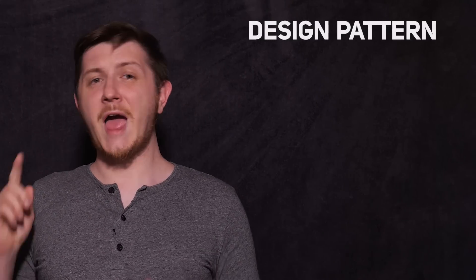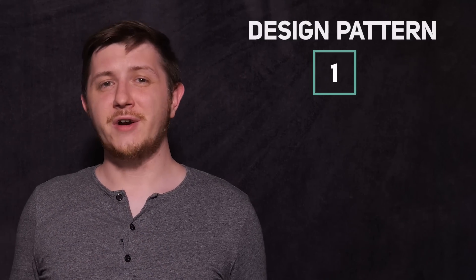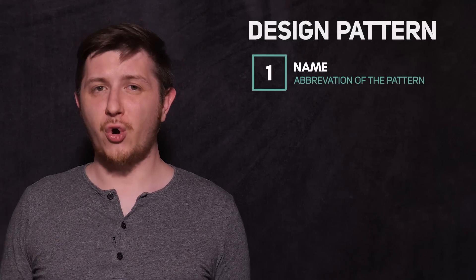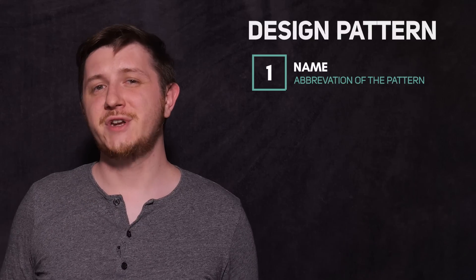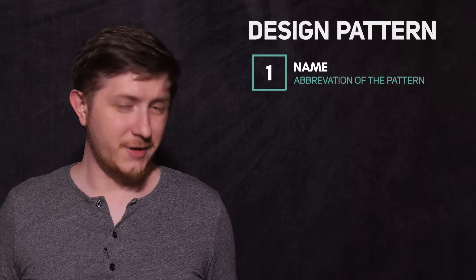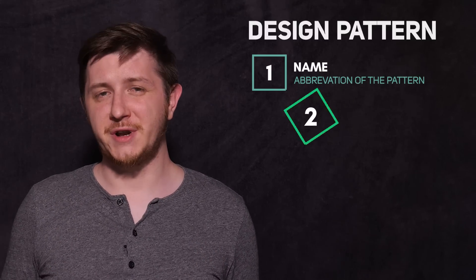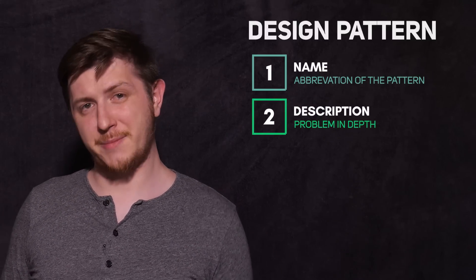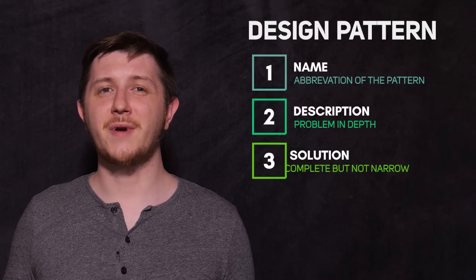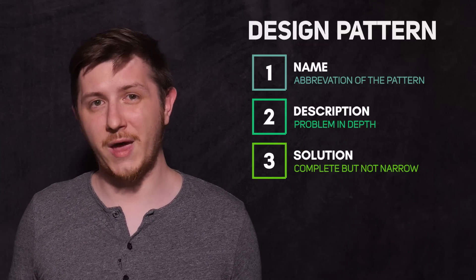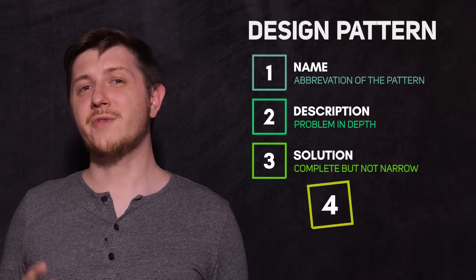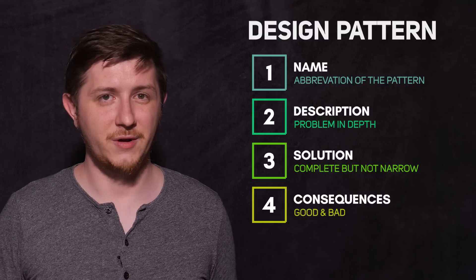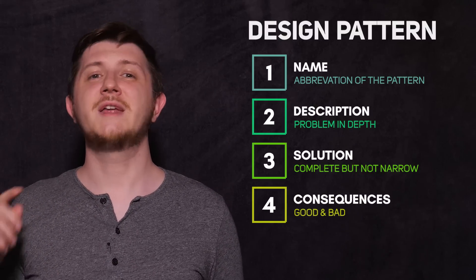Such design patterns consist of four things: a good clear name that is a short and accurate abbreviation of the design pattern; a description which explains the solved problem in depth; an actual solution described in a possibly abstract way; and consequences of using the pattern — both good and bad.